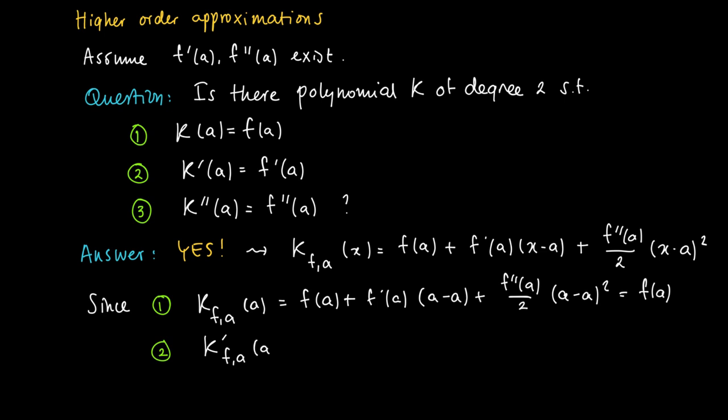Also, the second property holds. Just calculate the derivative of K. The derivative of the linear approximation gives f'(a), and we are only left with calculating the derivative in the quadratic term. But this one equals 2 times (x-a) times f''(a) divided by 2. Evaluate it in a. Now you see that we have a linear term (x-a). If we substitute x equals a over there, then this term vanishes, so we get f'(a).